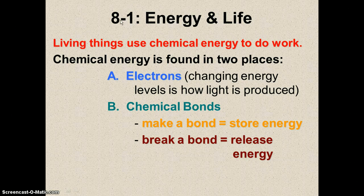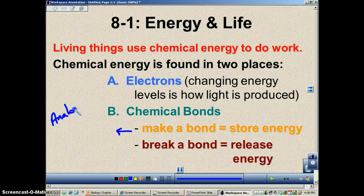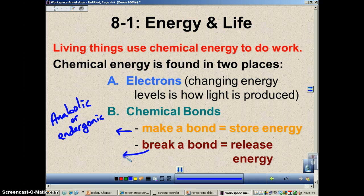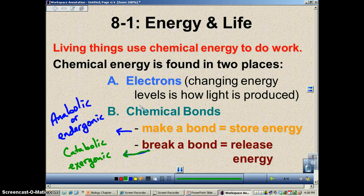To review: when you make a bond that's anabolic — remember this would be endergonic, you're storing energy inside; 'ergonic' refers to energy and 'endo' means inside. When you break a bond that's catabolic — remember the cat breaks things — and then you have exergonic, meaning the energy will exit the molecules. This is a review from chapter two.